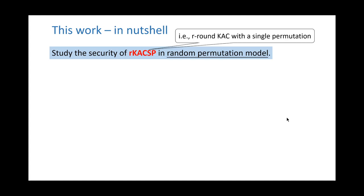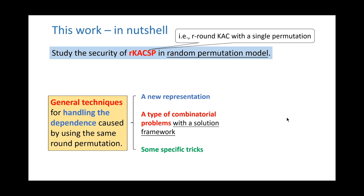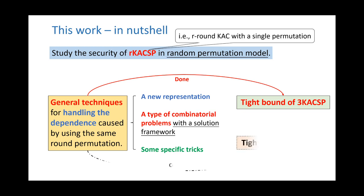At first, let's take a quick look at this work. It aims to study the security of rKACSP, in which all the random permutations are the same. Due to that, we propose some general techniques for handling the dependence caused by using the same random permutation. More specifically, the techniques consist of a new representation, and a type of combinatorial problems, for which we also give a solution framework, and some specific tricks which are useful during the proof. Based on these new techniques, we finally obtain a tight bound of three KACSP. And our techniques also show some evidence that the similar result holds for general rKACSP.